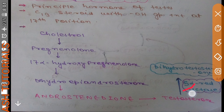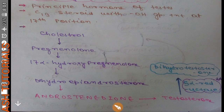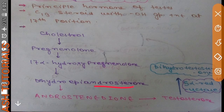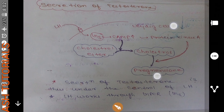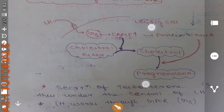5-alpha-reductase has two forms, type 1 and type 2, which we will discuss later. So this is all about the biosynthesis of testosterone, starting from cholesterol to DHEA, then androstenedione, and then testosterone.